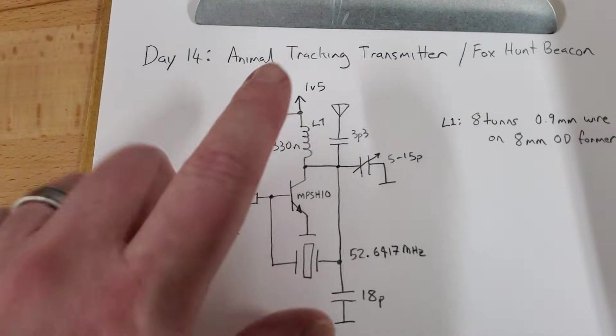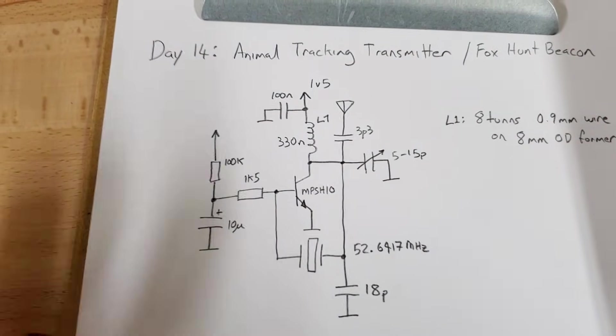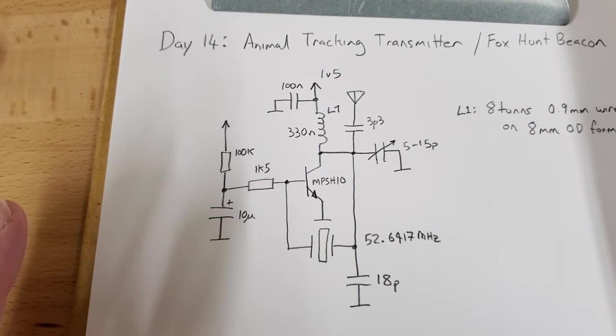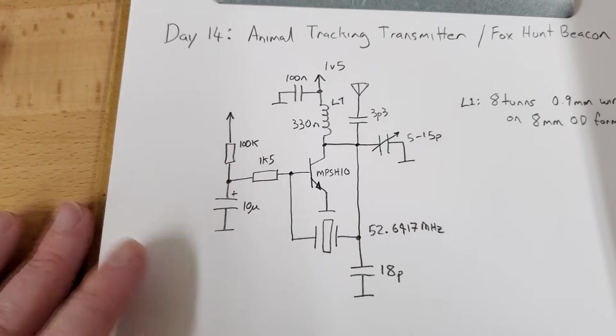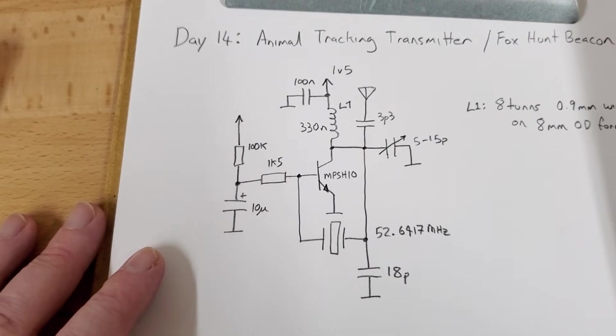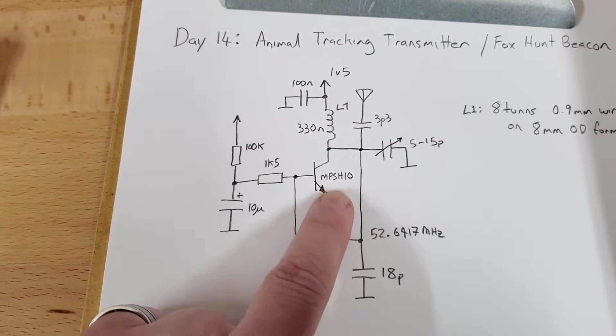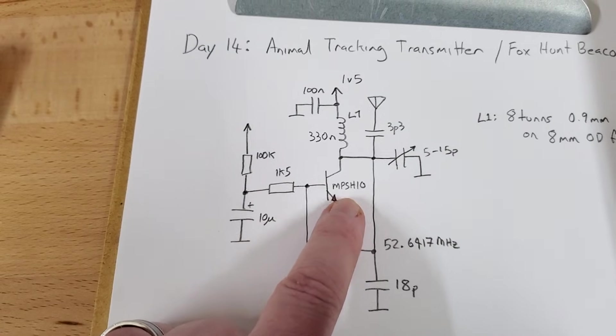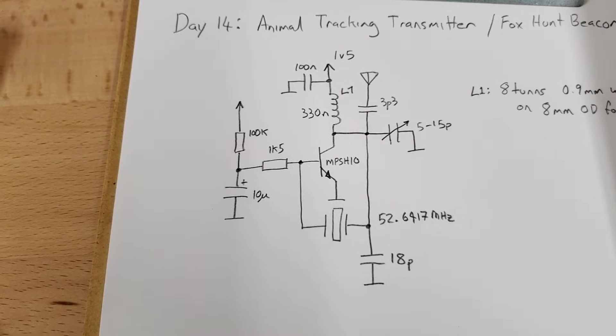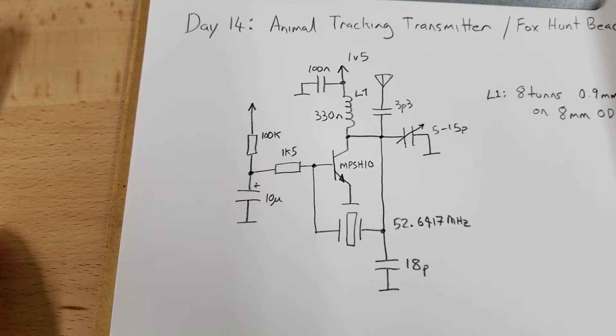But it's extremely simple. It's currently running off 1.5 volts. It oscillates at 1 volt just fine, and even lower than that, down to about 600 millivolts maybe. I use an MPSH10 RF transistor, but it works with other transistors, including a Humble 2N3904. It depends on the exact frequency that you're operating it at.